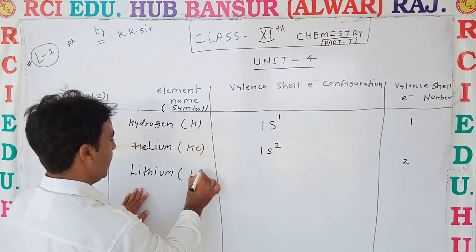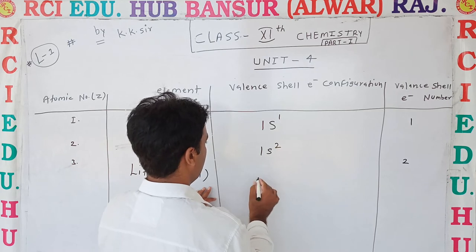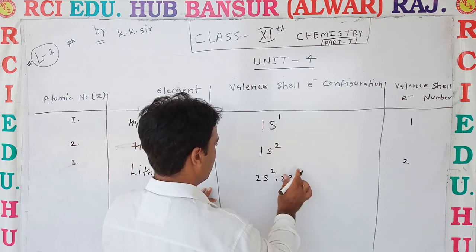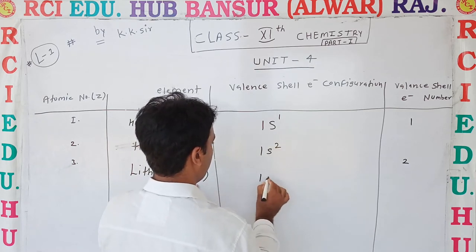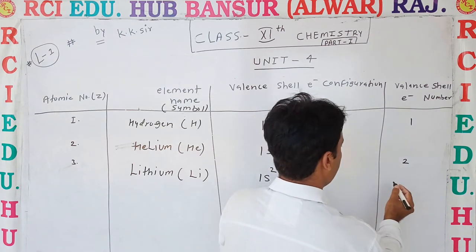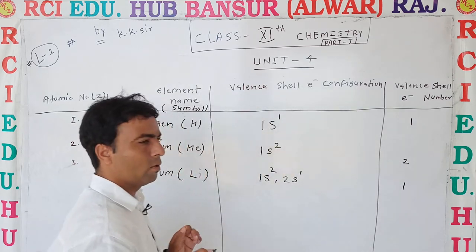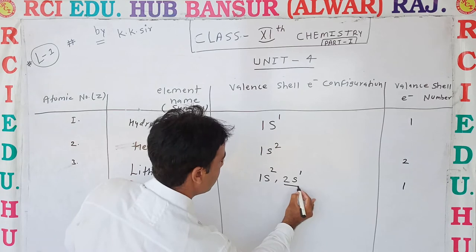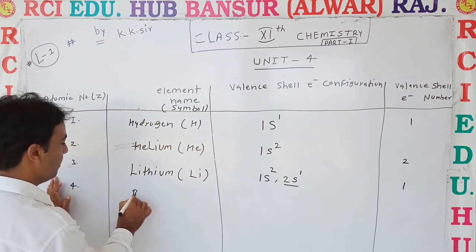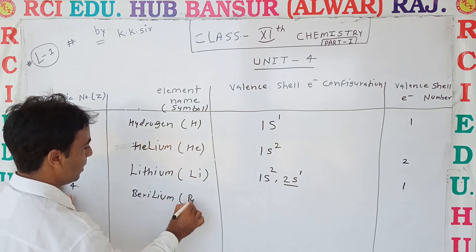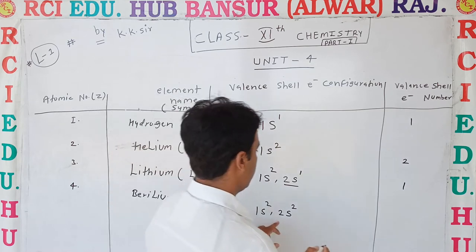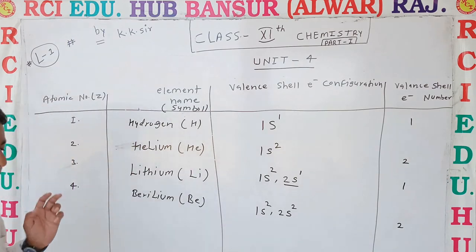Atomic number 3 is Lithium, represented by Li. Its valence electron configuration is 2s1, so valence electrons equal 1. Atomic number 4 is Beryllium, represented by Be. Its electronic configuration is 1s2 2s2, and valence electrons are 2.